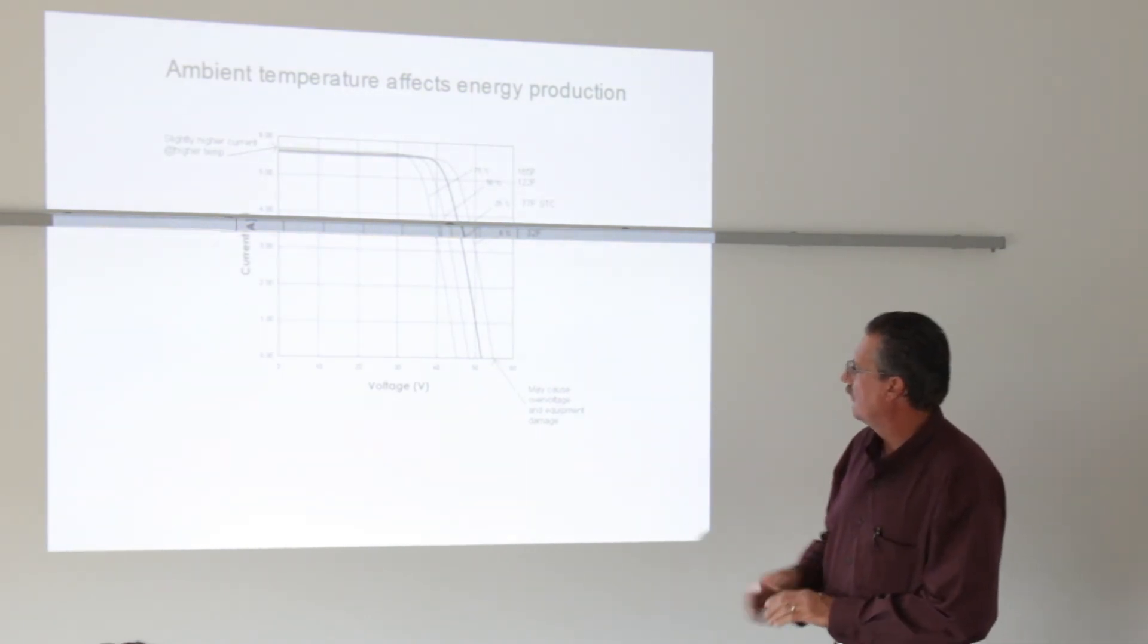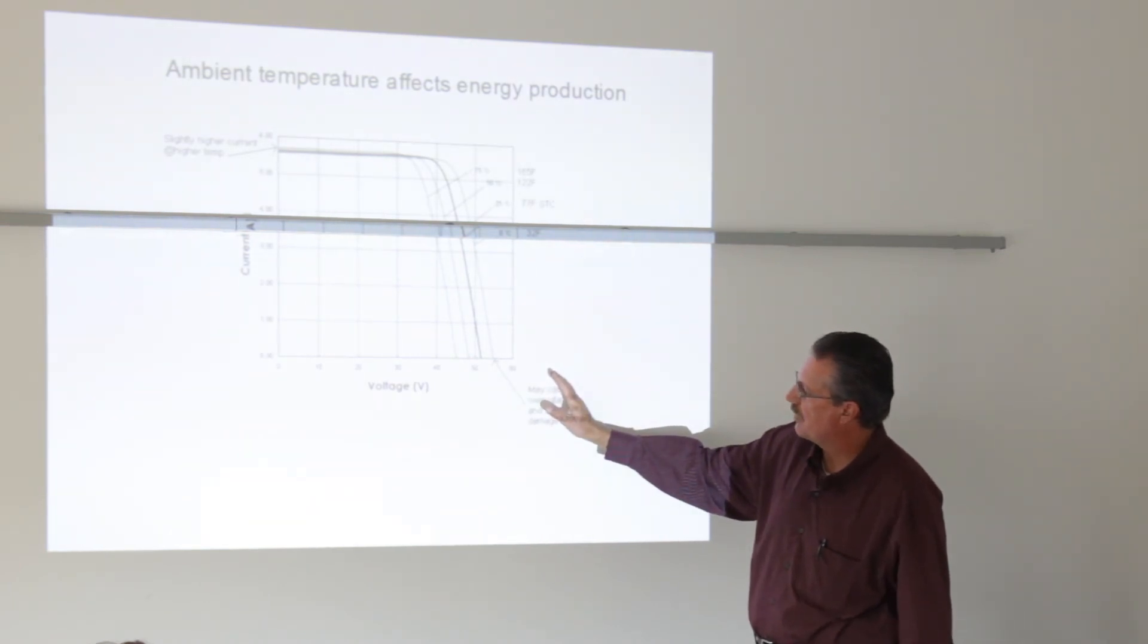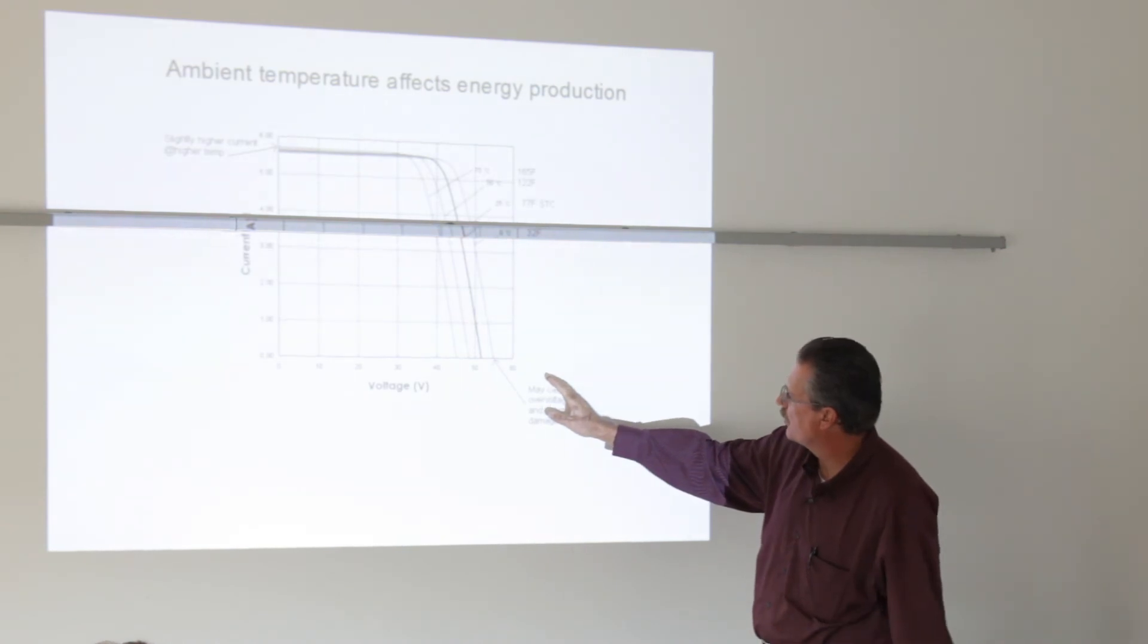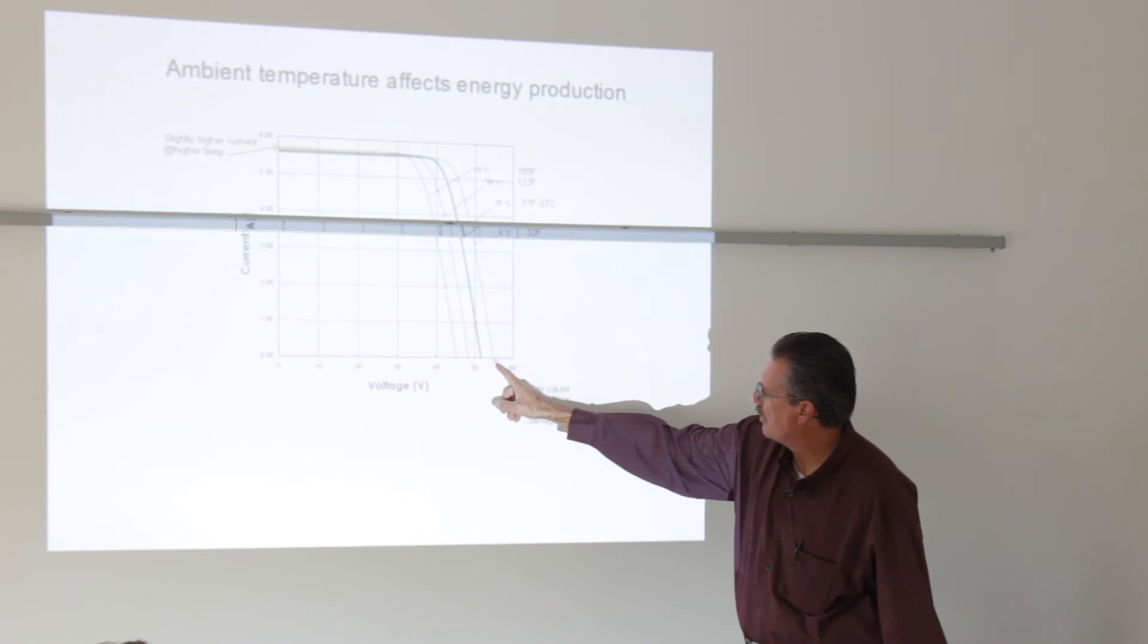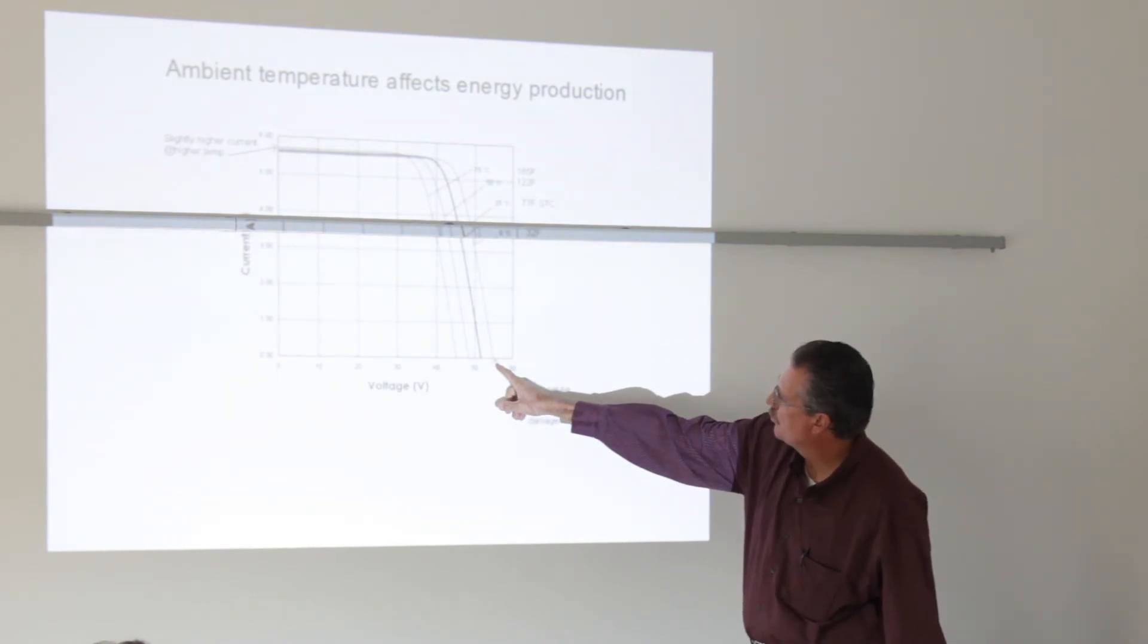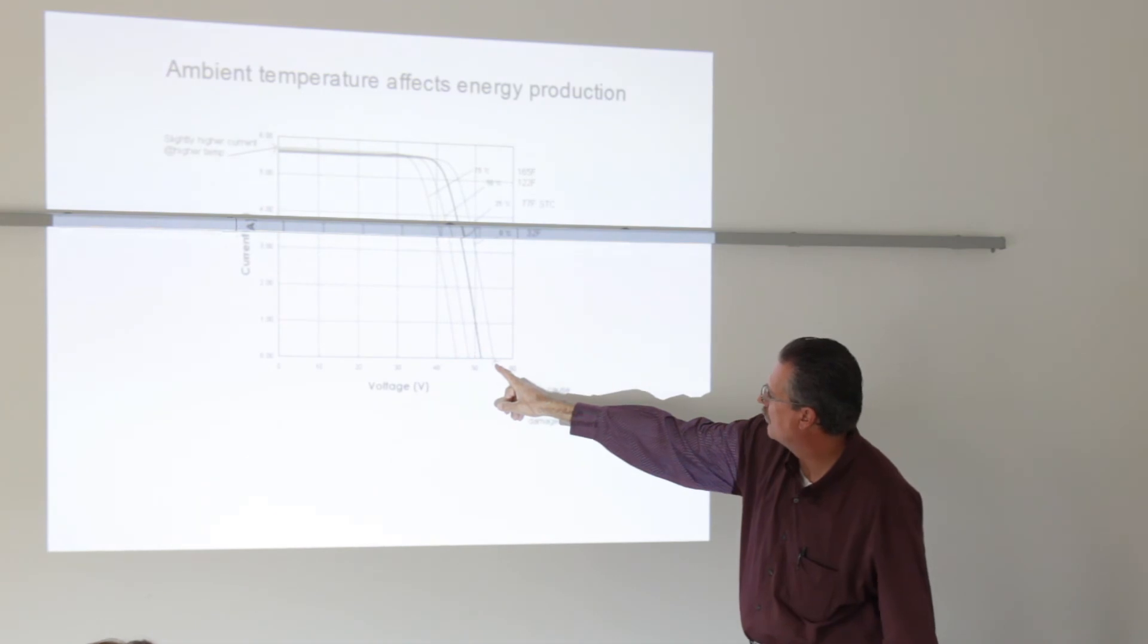This could cause magic smoke to come out of an inverter because you reach over-voltage. So this is why system design is very important. And again, this is why thin films have an advantage in higher ambient temperatures. Their energy drop is not as great as it would be for a crystalline module. But again, you do need, their efficiency is not as good. But for a high-temperature environment, thin films are good.